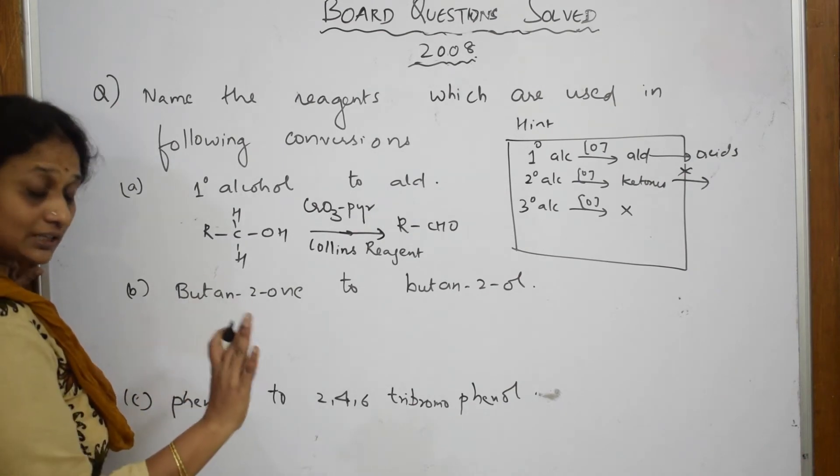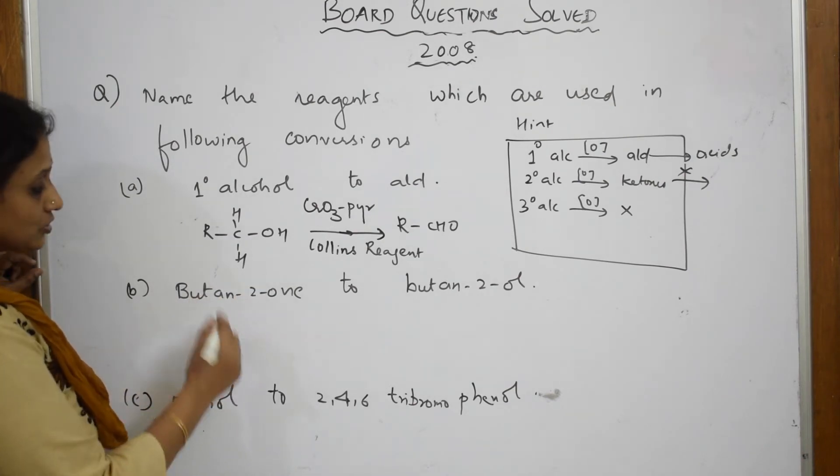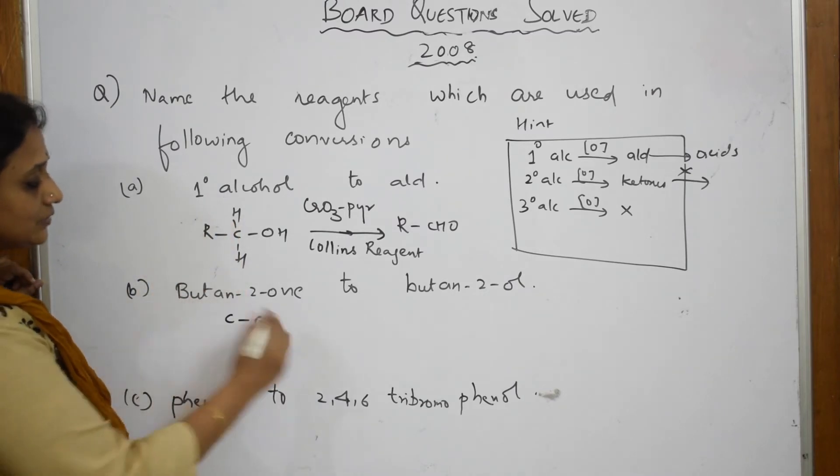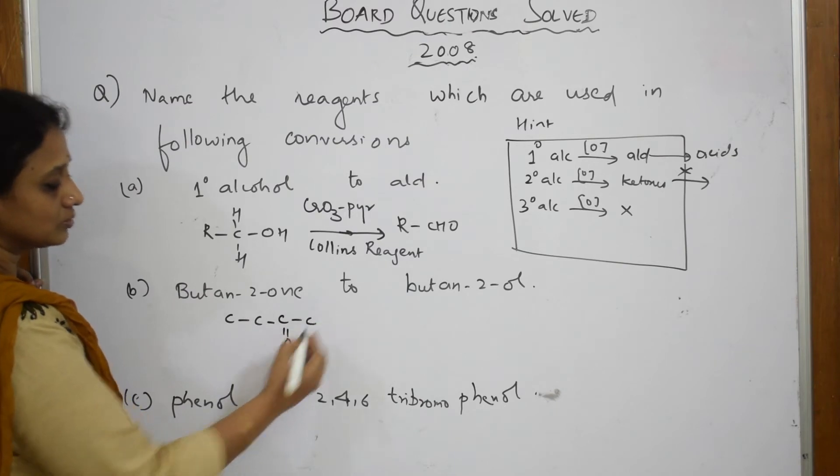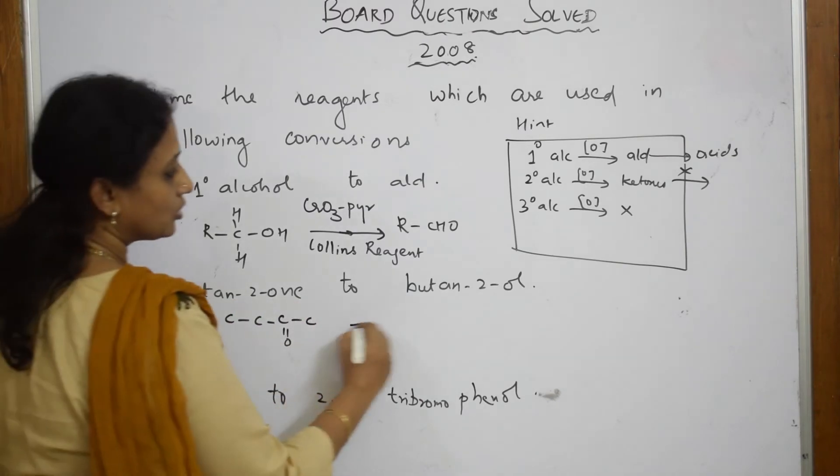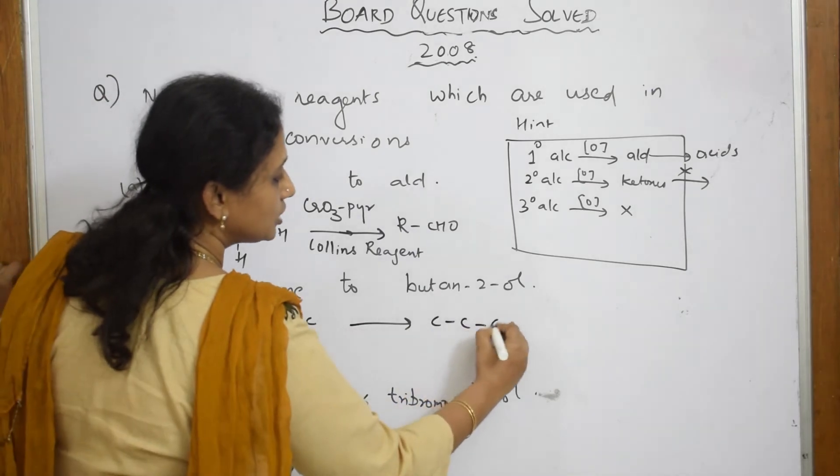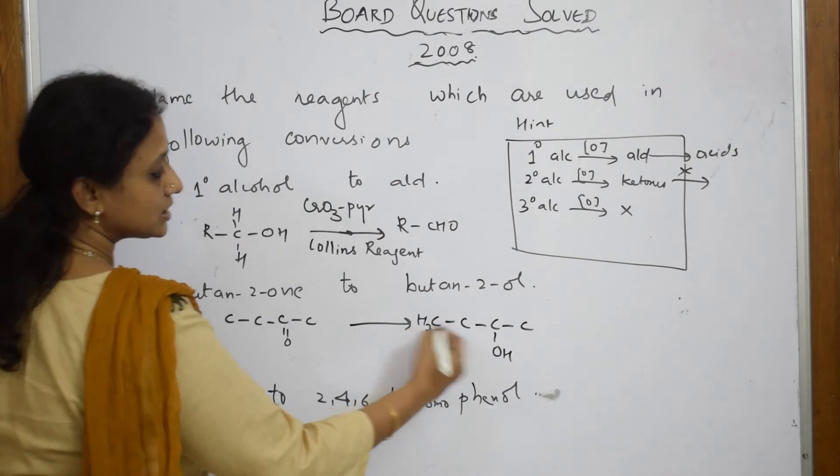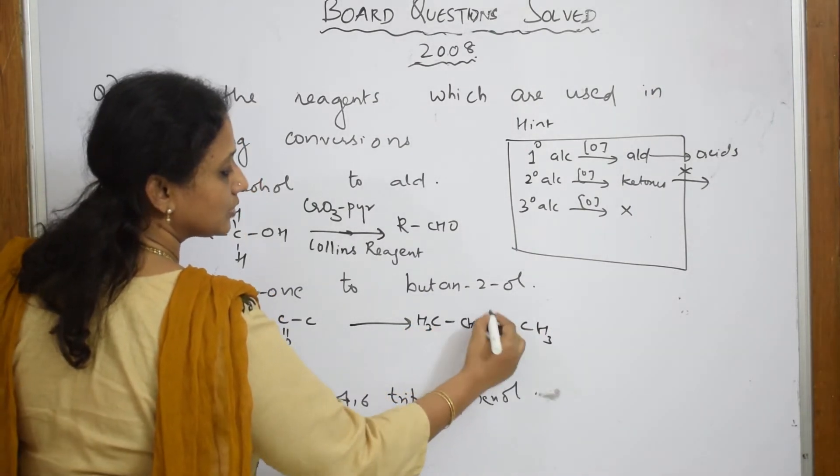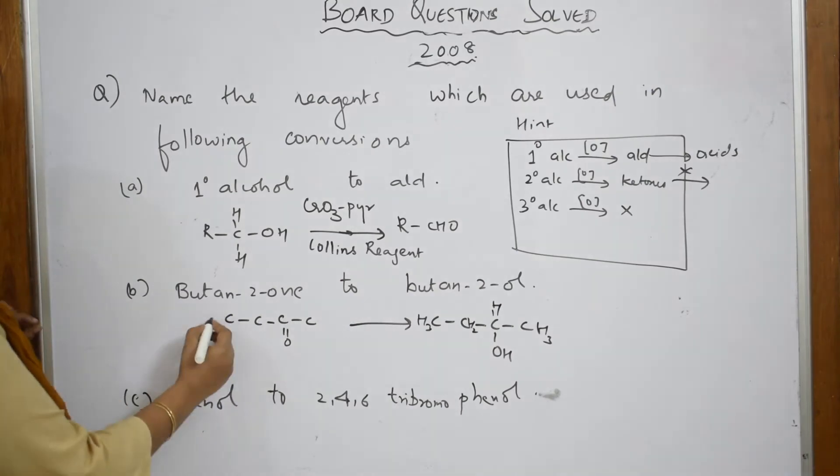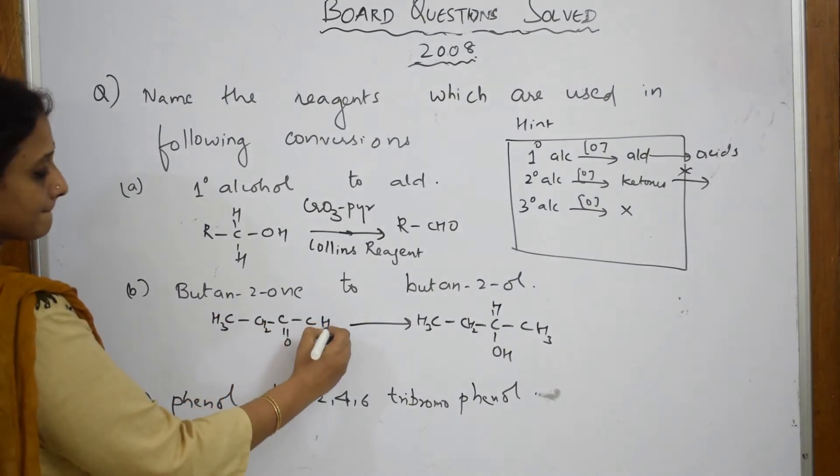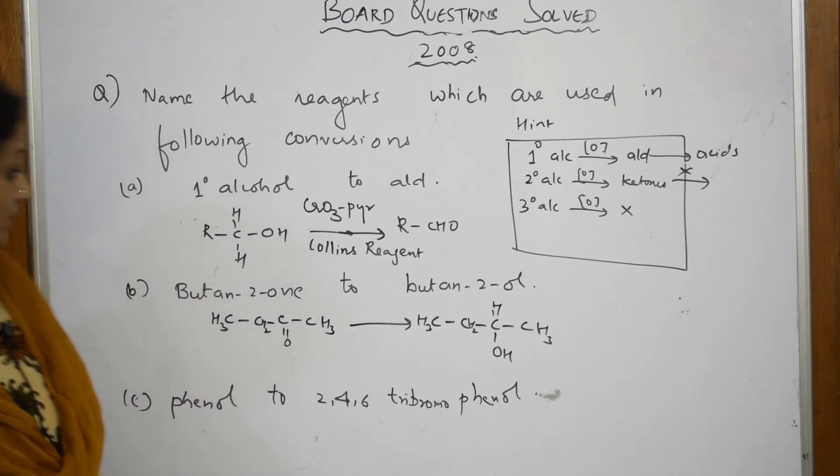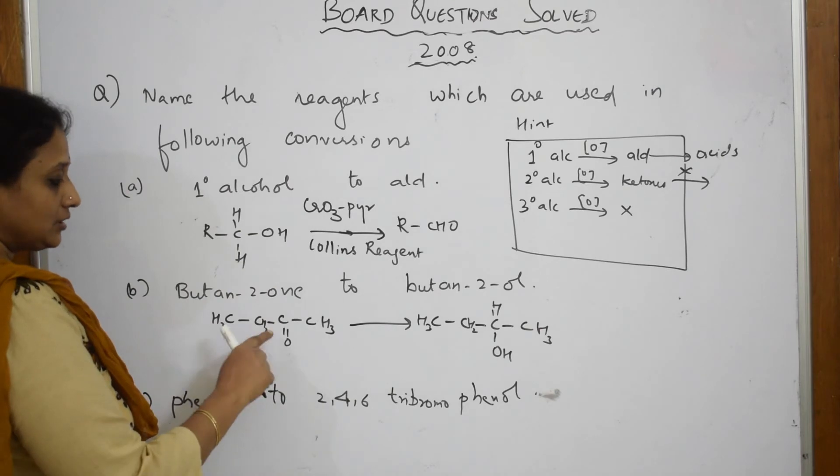Now they've given me butanone to butanol. I have to just write the structure here - they've given me a structure. Butanol, two-butanol - which butanol did they give me? They've given me 2-butanol. This is your CH3, CH2, and your H. This is your 2-butanol. This is your butanone: butan-1,2,3-one. Observe carefully what is the difference between both. Here this is a ketone and this is an alcohol.